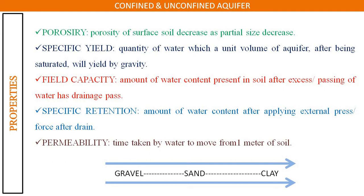Second is specific yield. Specific yield is the quantity of water which a unit volume of aquifer, after being saturated, will yield by gravity. After excess saturation, the water will drain due to gravity, and this is known as specific yield.